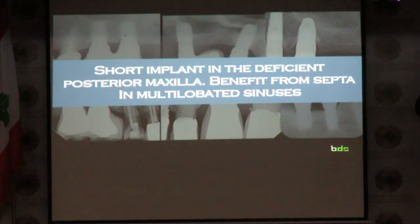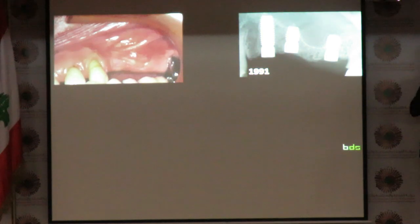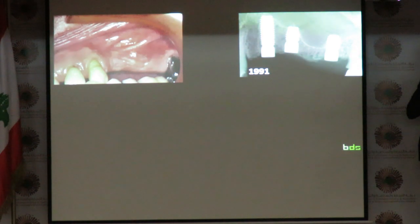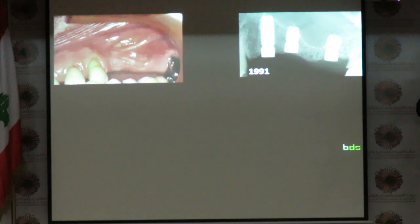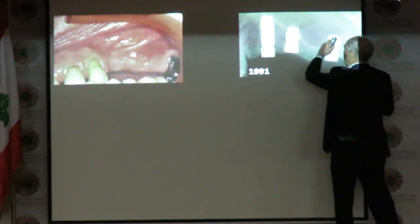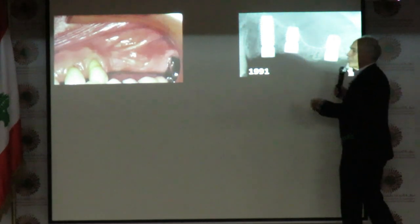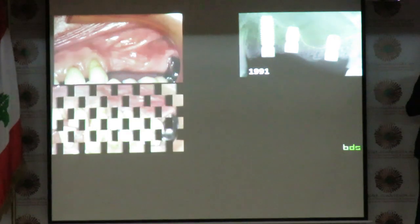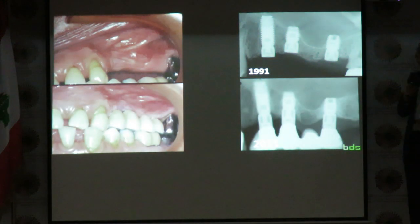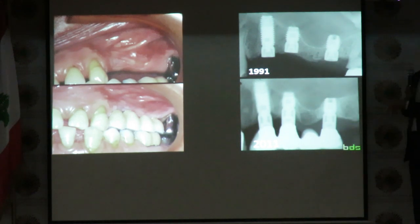Let's start with short implants and the deficient maxilla. This is a situation we treated in 1991. We had a great publication often quoted in the literature that we did in the IJOMI in 2001 on short implants, but our experience with that started a long time ago. In 1991, we didn't do sinus lifts in those days — we used 7-millimeter screw vent implants, machine surface implants in the sub-sinus area. And this is the situation some 20 years later. We learned from this.